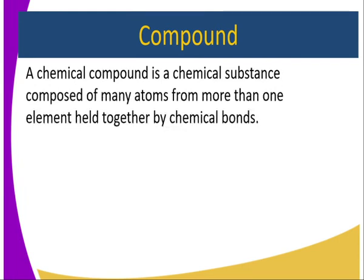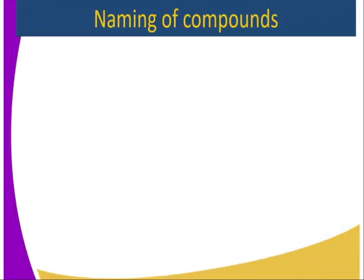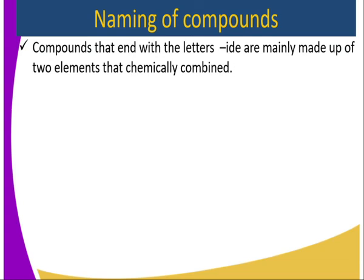A chemical compound is a substance composed of atoms from more than one element held together by chemical bonds. These bonds can be ionic, covalent, or coordinate bonds, which hold the atoms together to form a compound. Compounds that end with the letters '-ide' are mainly made up of two elements that are chemically combined.